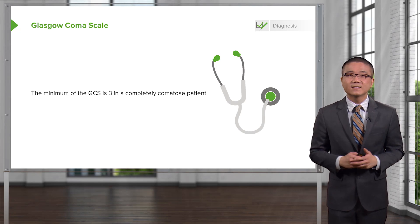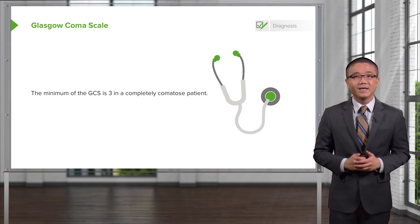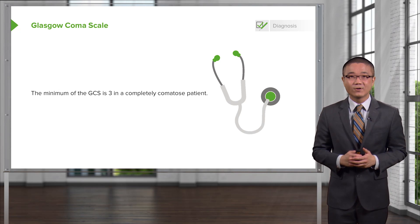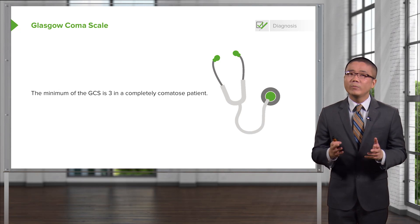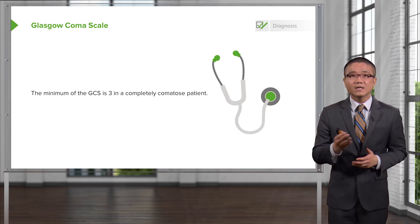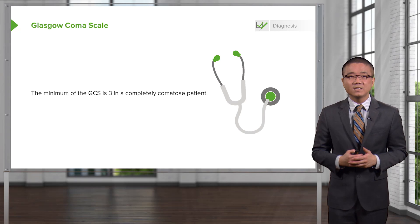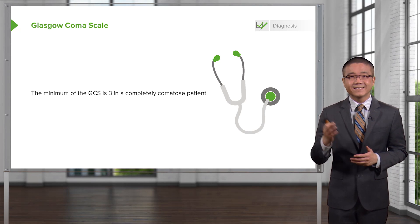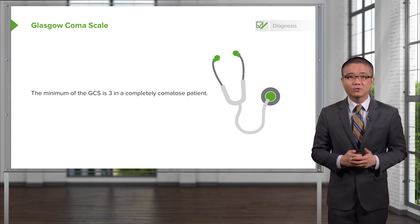As a side note, if the patient is intubated, clearly you can't assess the verbal. But remember, the gestalt is very important. The placement of the ET tube — if that is the only limiting factor for a patient's ability to speak — we assign a T for endotracheal tube at the end of the GCS score.